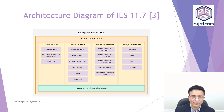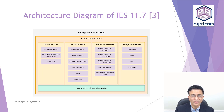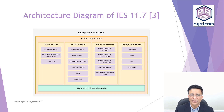API microservices include Enterprise Search, catalog search, application configuration, user preferences, social, and audit trail. User interface microservices, called directly by the UI, include Enterprise Search, Information Governance Catalog, and monitoring. They all use the same logging and monitoring microservices. That's the architecture of Enterprise Search 11.7 in brief. If you have any questions about Information Server or Enterprise Search architecture, please leave a comment below.